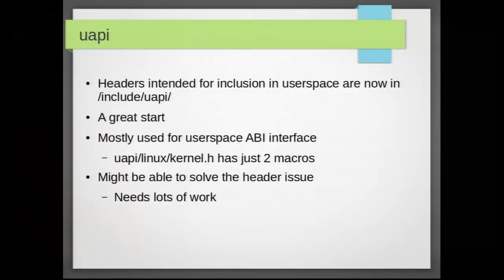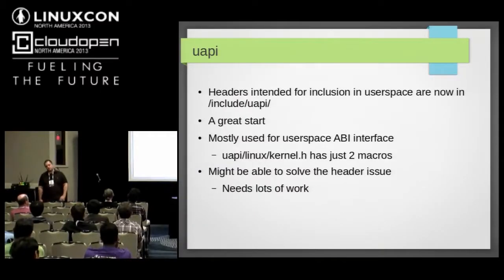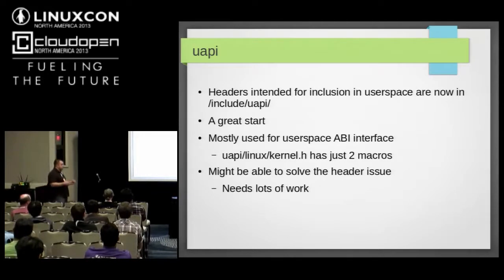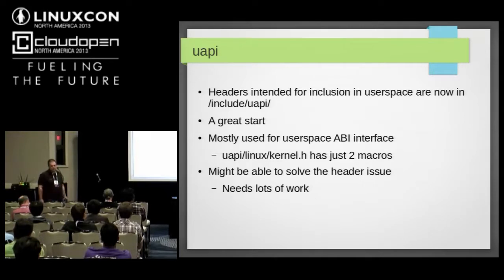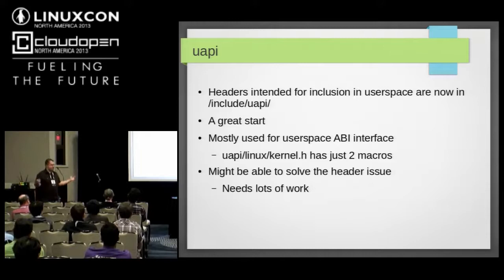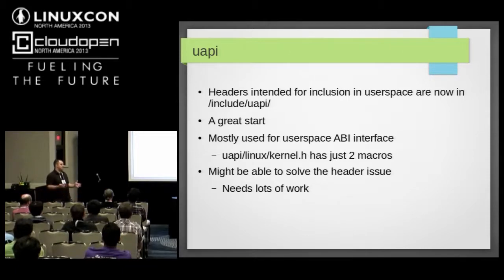What they did to try and improve that is add something called UAPI. It's an attempt to split the headers into headers intended to be included in userspace and kernel headers. That's a good start, because it means the kernel now has a collection of headers intended to be used by userspace. The problem is that UAPI is basically trying to provide ABI to userspace — it doesn't try to provide common code. It just provides mostly data — the things that get passed between user and kernel. It doesn't really provide lists or hash tables or whatever. So UAPI would be able to solve the header problem, but it needs quite a lot of work in splitting the kernel headers into userspace and kernel headers.